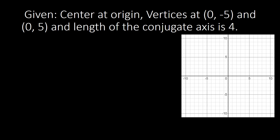Our third example has the center at the origin, vertices at (0, −5) and (0, 5), and a conjugate axis of length 4. Plotting these: the center is at the origin, V1 is at (0, −5), and V2 is at (0, 5). Based on the graph, the orientation is clearly vertical.